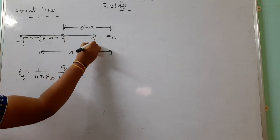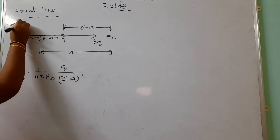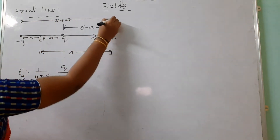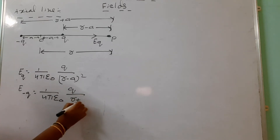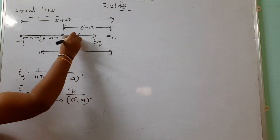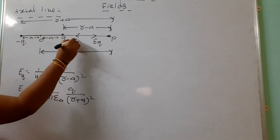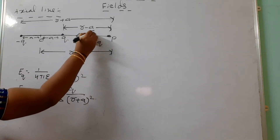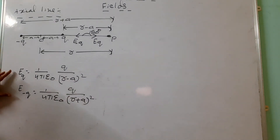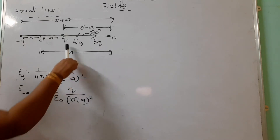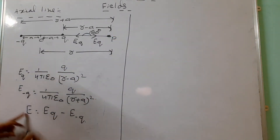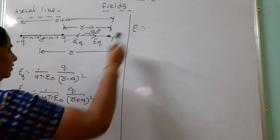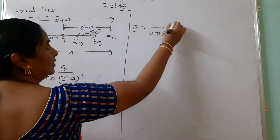The direction of E_Q is away from the positive charge. The distance from the negative charge to point P is R + A, so the intensity due to the negative charge is E_−Q = (1/4πε₀) × Q/(R+A)², directed towards the negative charge. The angle between the two intensity vectors is 180°, so the resultant intensity E = E_Q − E_−Q.